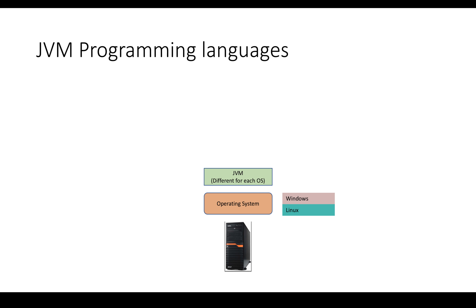JVM takes bytecode, which is common to all JVMs. It can interpret that bytecode and then translate it into underlying operating system instructions to execute our program.